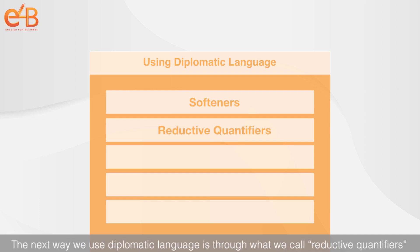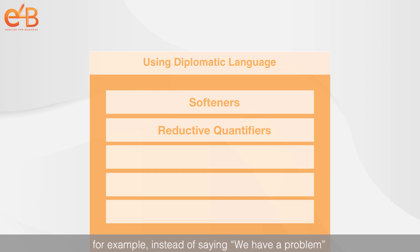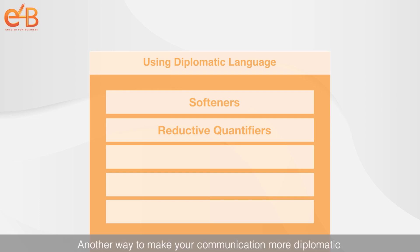The next way we use diplomatic language is through what we call reductive quantifiers — for example: a little, slight, somewhat. Here we can take the heat out of a potentially negative statement. For example, instead of saying 'we have a problem,' we can reduce the impact by saying 'we have a slight problem.'